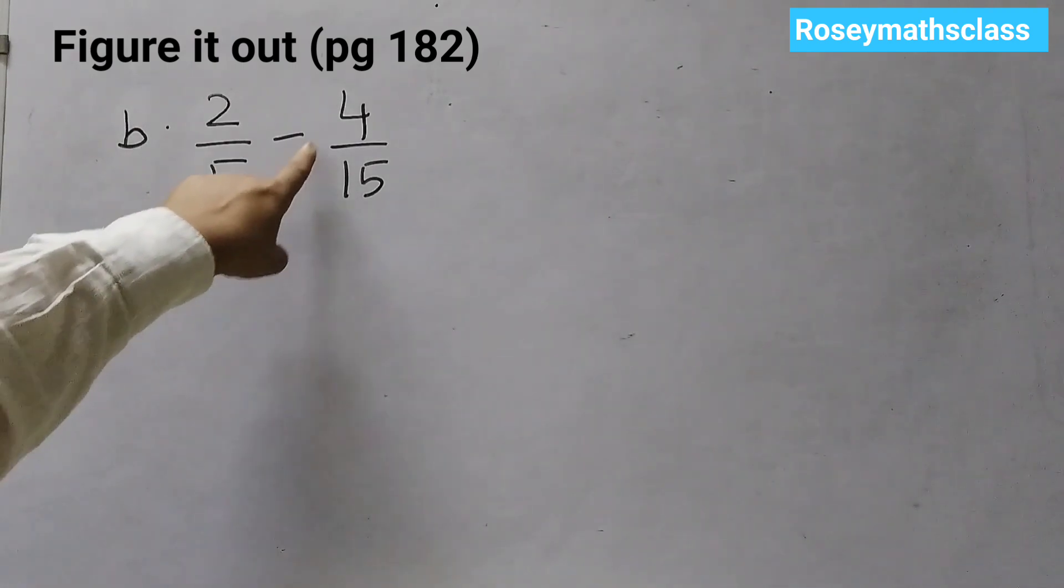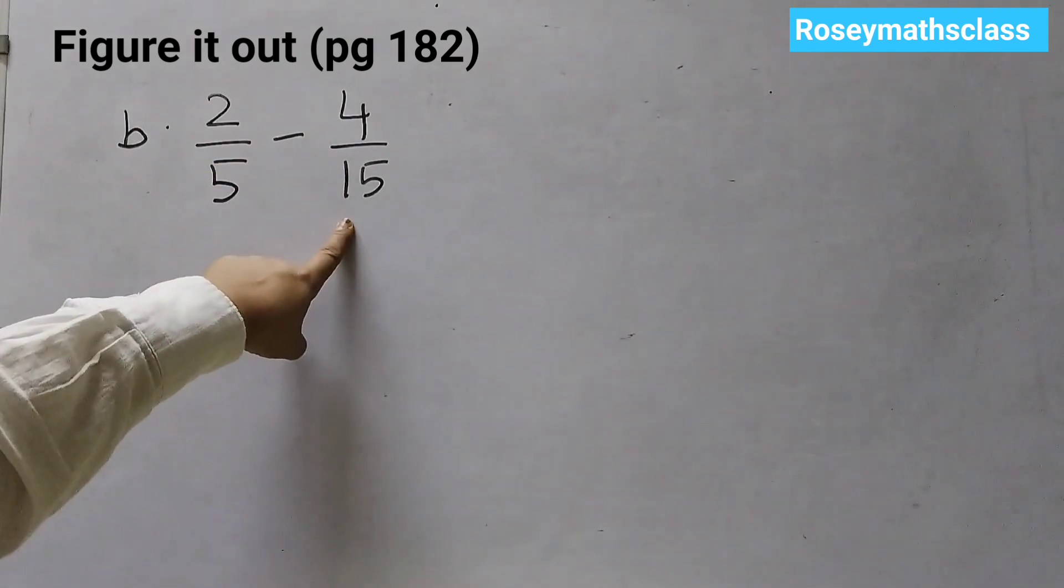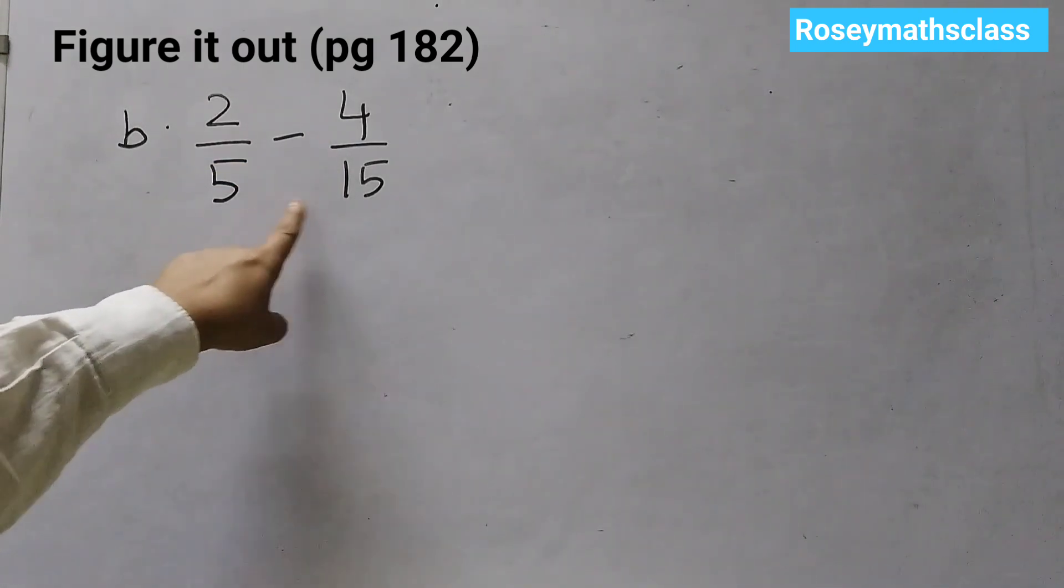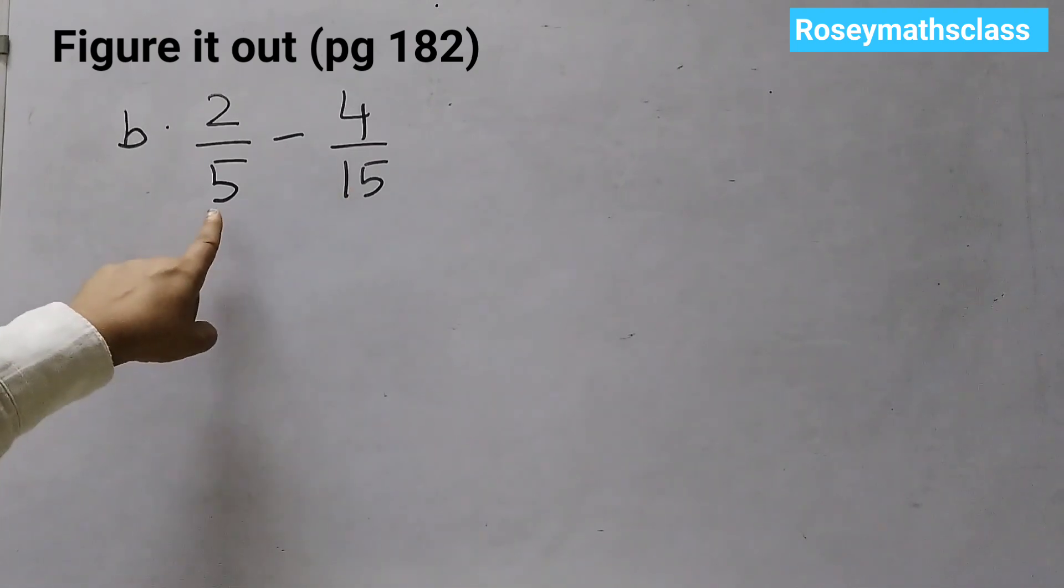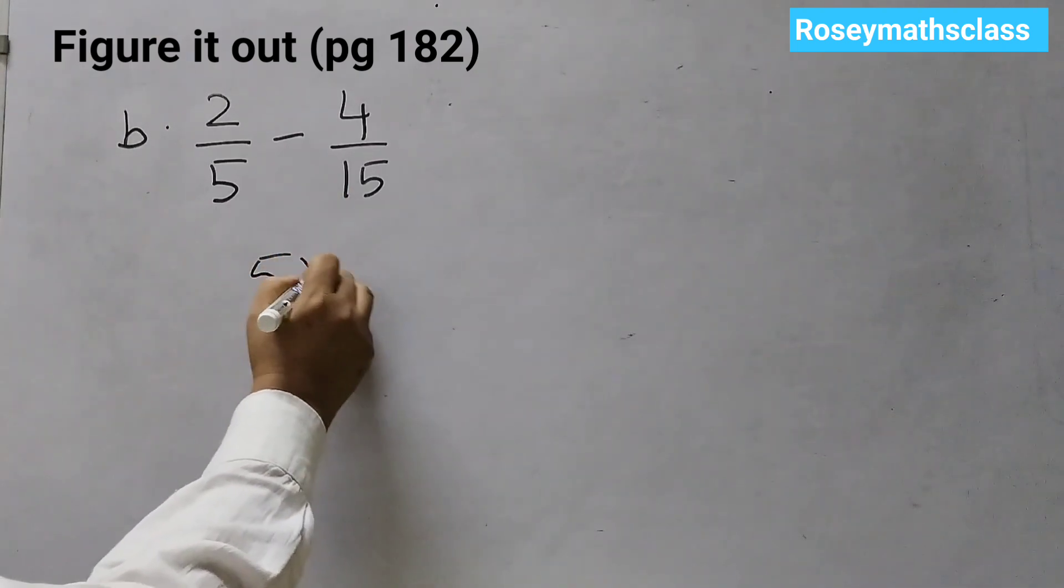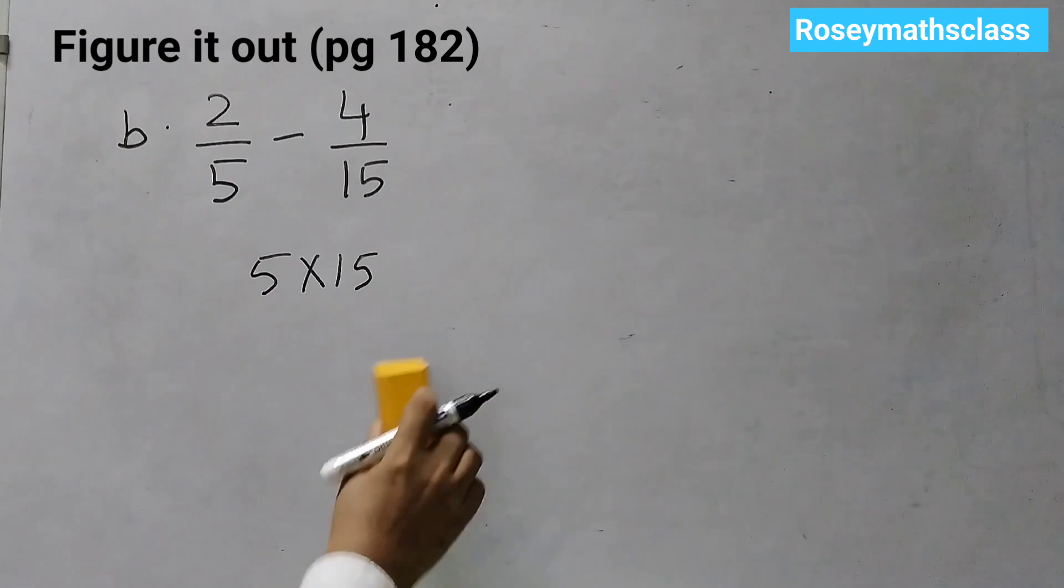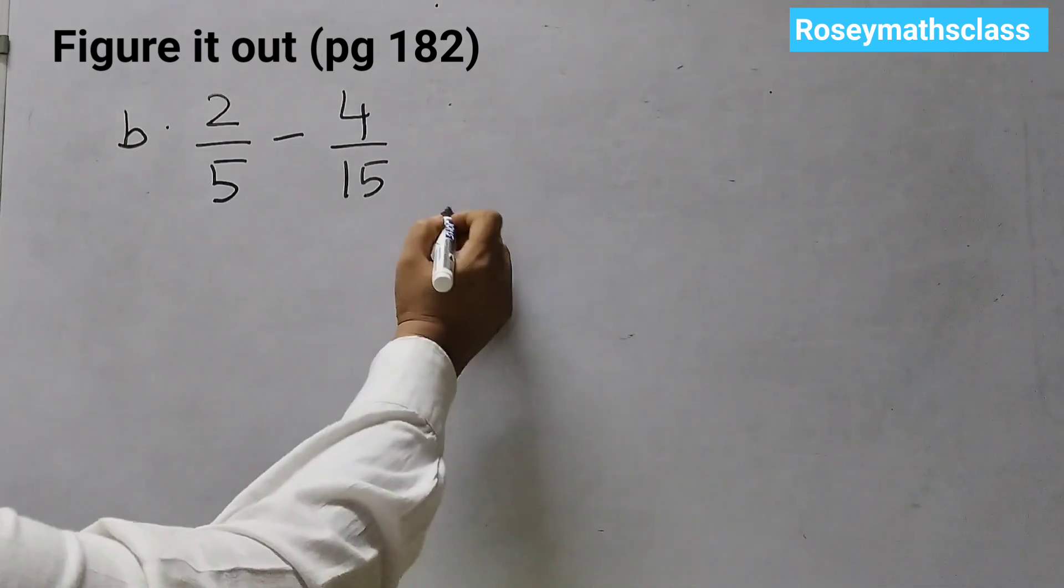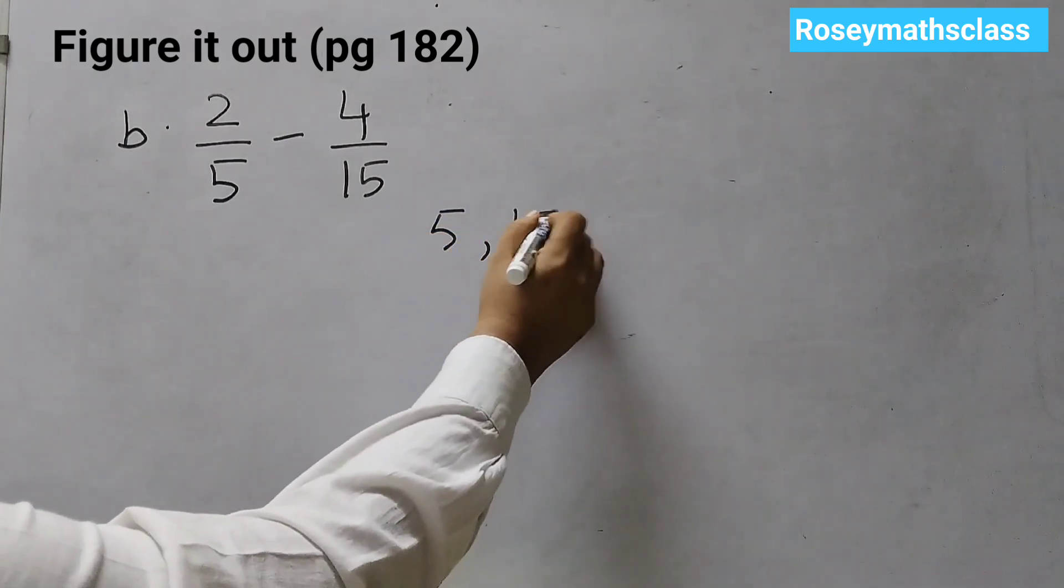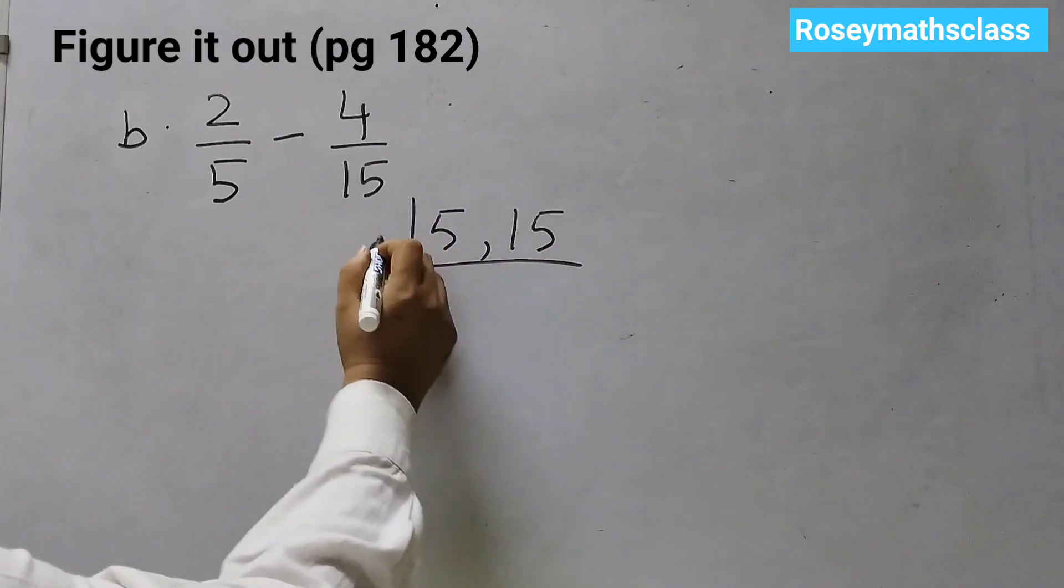Next one is 2 upon 5 minus 4 upon 15. Different denominators. However, we know that 5 into 3 is 15. So instead of multiplying like this, 5 into 15 and finding the common multiple, what we will do is, we will write it as 5, 15, then divide by 5.